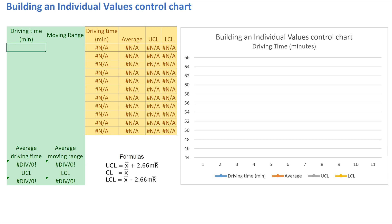The diagram that we see here is divided into three zones. There is the green zone, where I'm going to be entering the numbers, and we will see in the next column in the green area a moving range being calculated, which is the difference between one value and the one before.